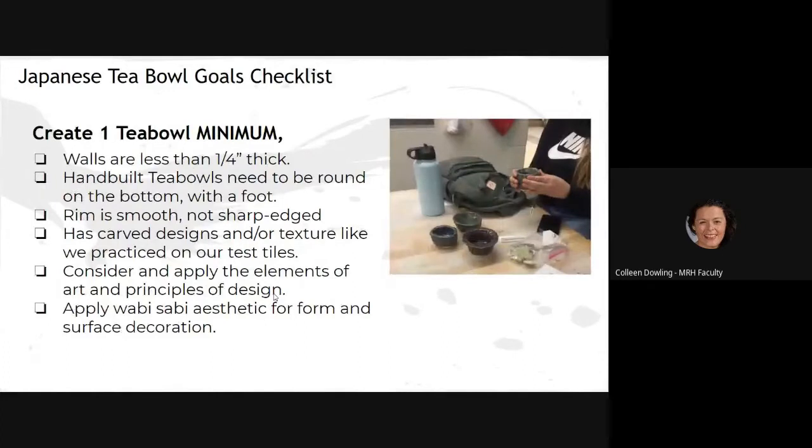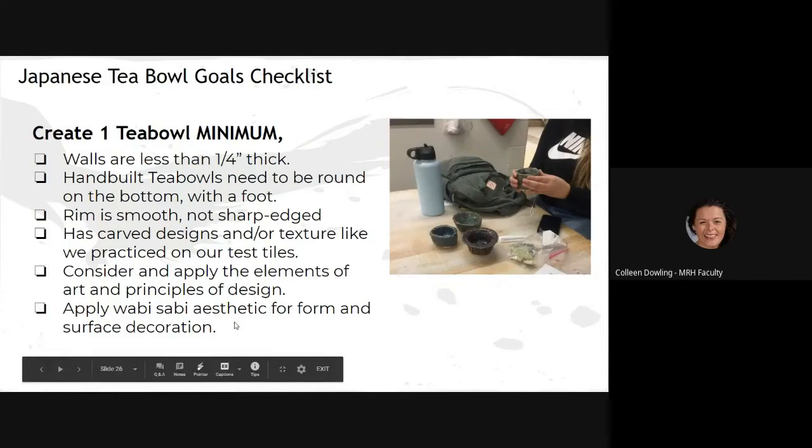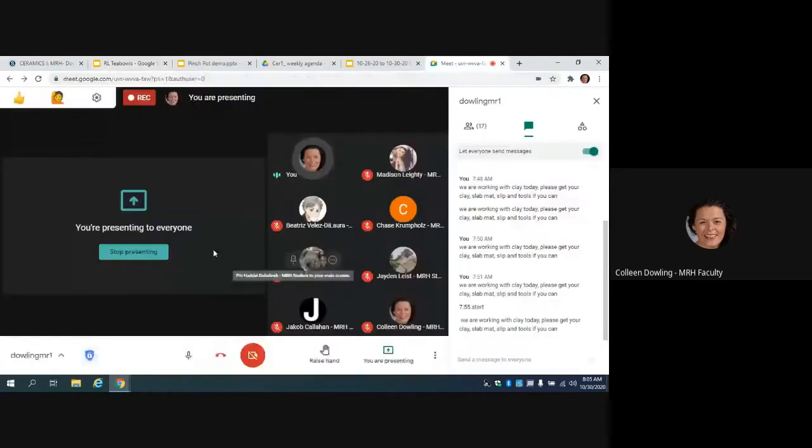So here are the requirements. You shouldn't have really thick or really thin walls or sides of your pot. The hand-built t-bowls will be round on the bottom with a foot because they look more realistic and more comfortable. You need a smooth rim. Otherwise, it could get sharp in the firing. We are going to press and carve designs into our piece. So today we can press and Monday when it's leather hard, we'll carve. You want to consider those elements and principles of design that we talked about. Form, texture, and when we talk about glaze next, color. And then always think of that wabi-sabi aesthetic. So natural, earthy, that kind of thing for our form. And the surface decoration is the pressing into the clay and the glaze.